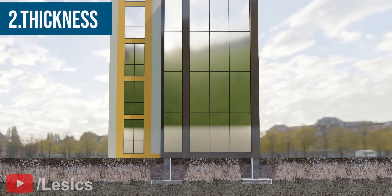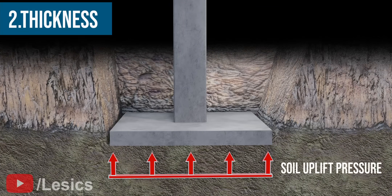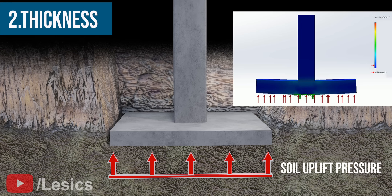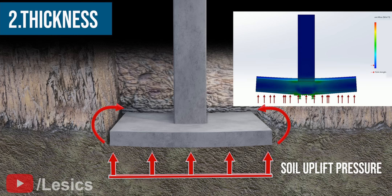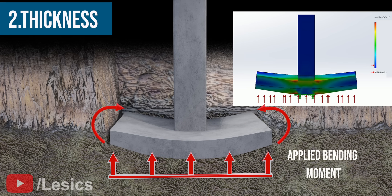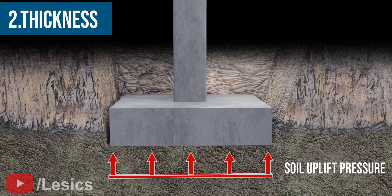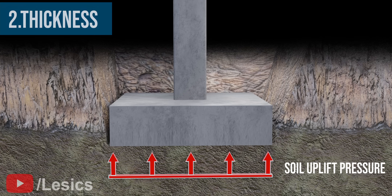The second design aspect is the thickness of the footing. The footing has to withstand pressure applied by the soil as well. If the footing's thickness is inadequate, the footing on either side of the column will bend due to the soil applying uplift pressure on it. This effect is called applied bending moment, and you can see this effect in the FEA result here. To prevent this, the thickness of the plate is increased, giving us a stronger and safer footing.